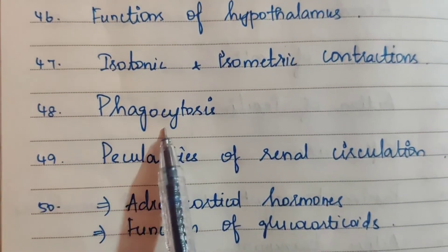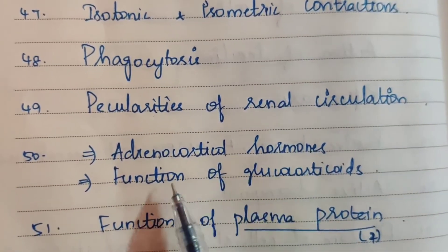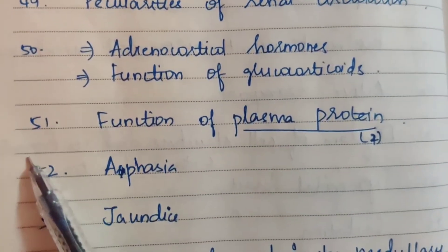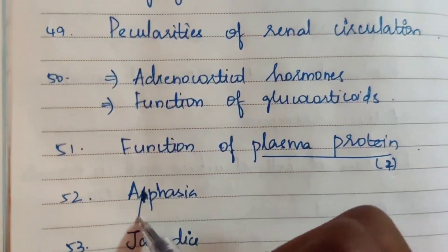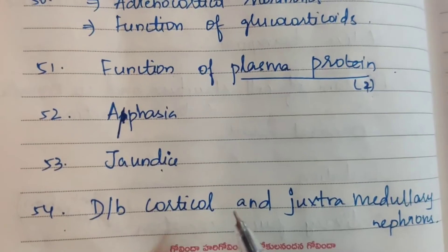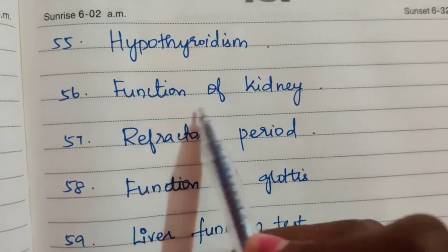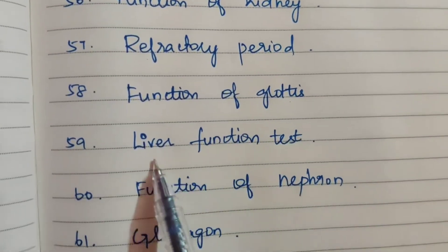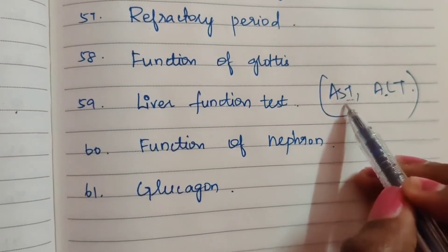Forty-third: pyramidal tract. Forty-fourth: lactation. Salivary juice secretion and gastric secretion. Calciotrophic hormones. Forty-sixth: function of hypothalamus. Forty-seventh: isotonic and isometric contractions. Forty-eighth: phagocytosis. Forty-ninth: peculiarities of renal circulation. Fiftieth: adrenocortical hormones — glucocorticoids. Fifty-first: function of plasma proteins. Fifty-second: erthesia. Fifty-third: jaundice. Fifty-fourth: difference between cortical and juxtamedullary nephrons. Fifty-fifth: hypothyroidism. Fifty-sixth: function of kidney. Fifty-seventh: refractory period. Fifty-eighth: function of glottis. Fifty-ninth: liver function test — AST, ALT.